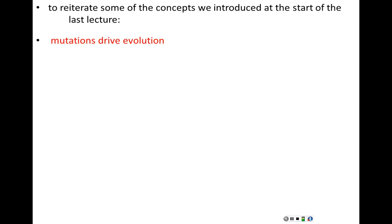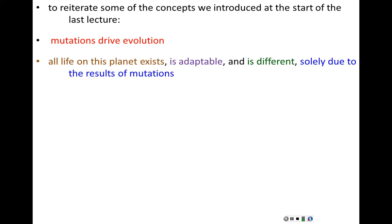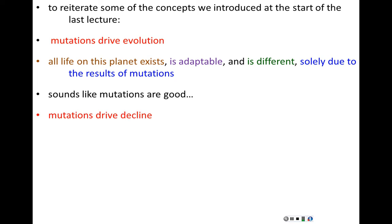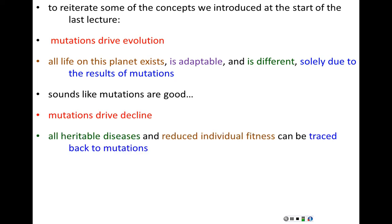Let's reiterate some important points from the last lecture. Mutations drive the process of evolution — all life on this planet exists because of mutations, and life is adaptable because of mutations. But mutations also drive decline: all inherited diseases in humans are due to mutations, and individual reduced fitness can be traced back to mutations. So what's going on?